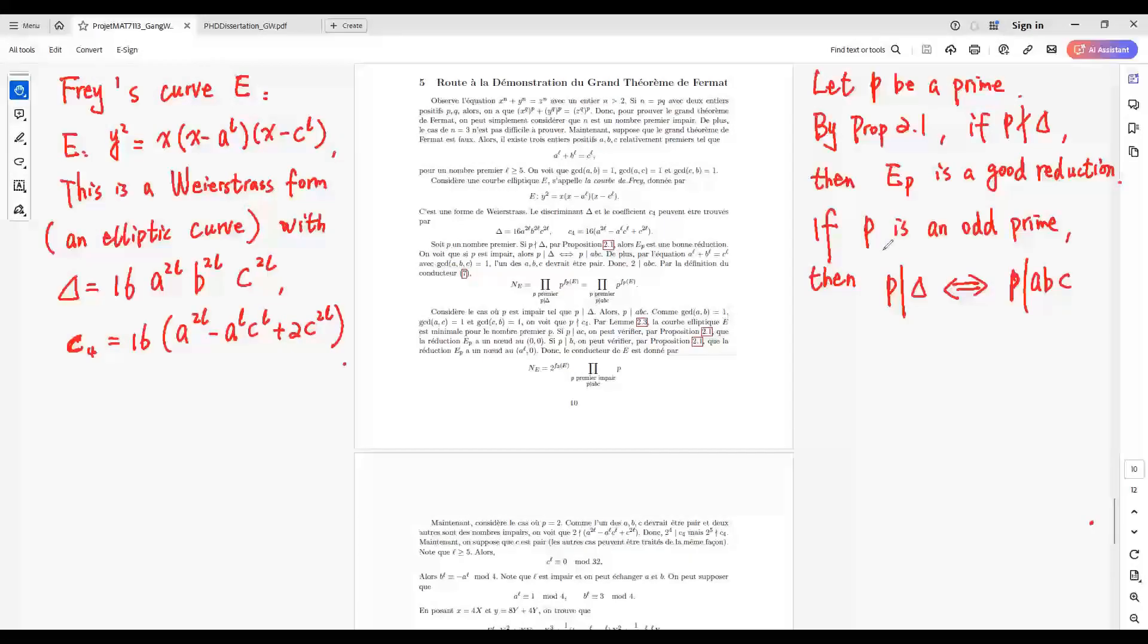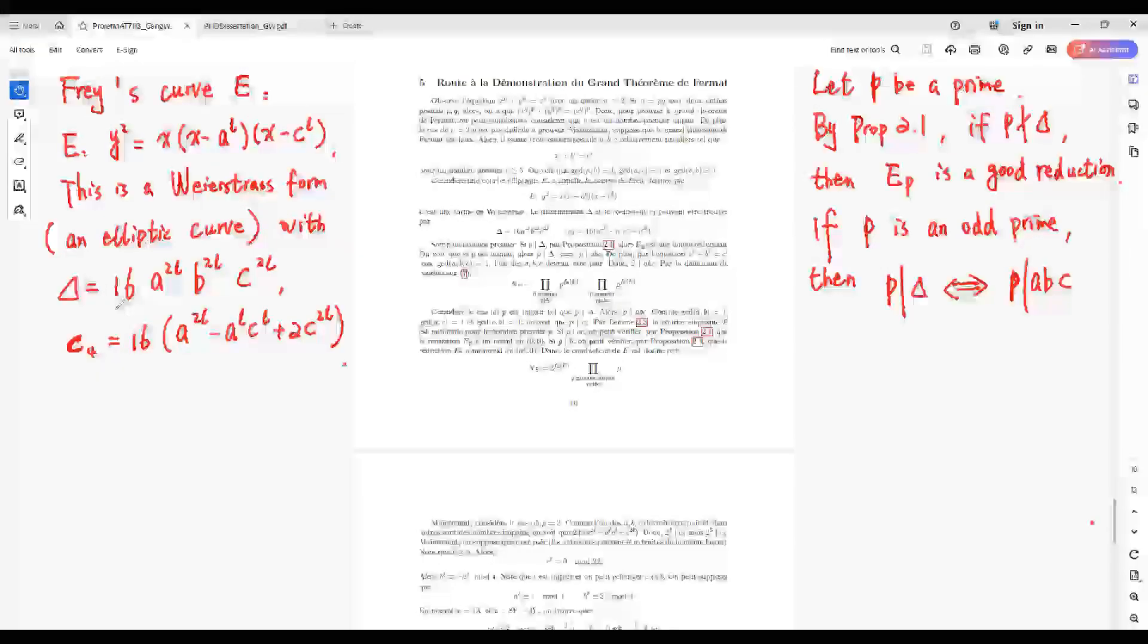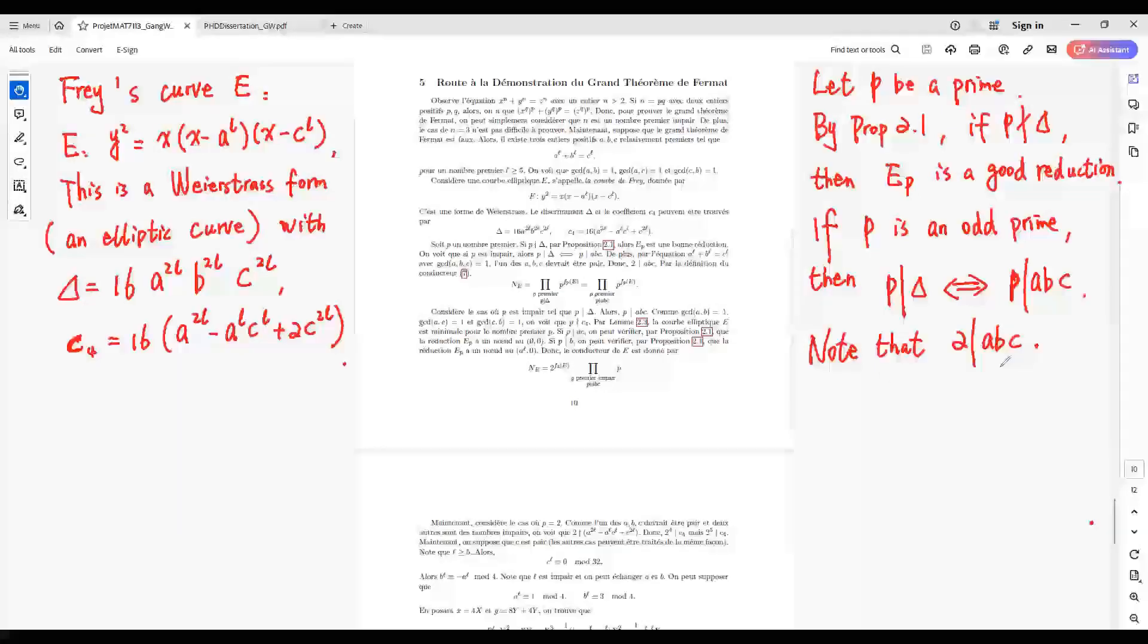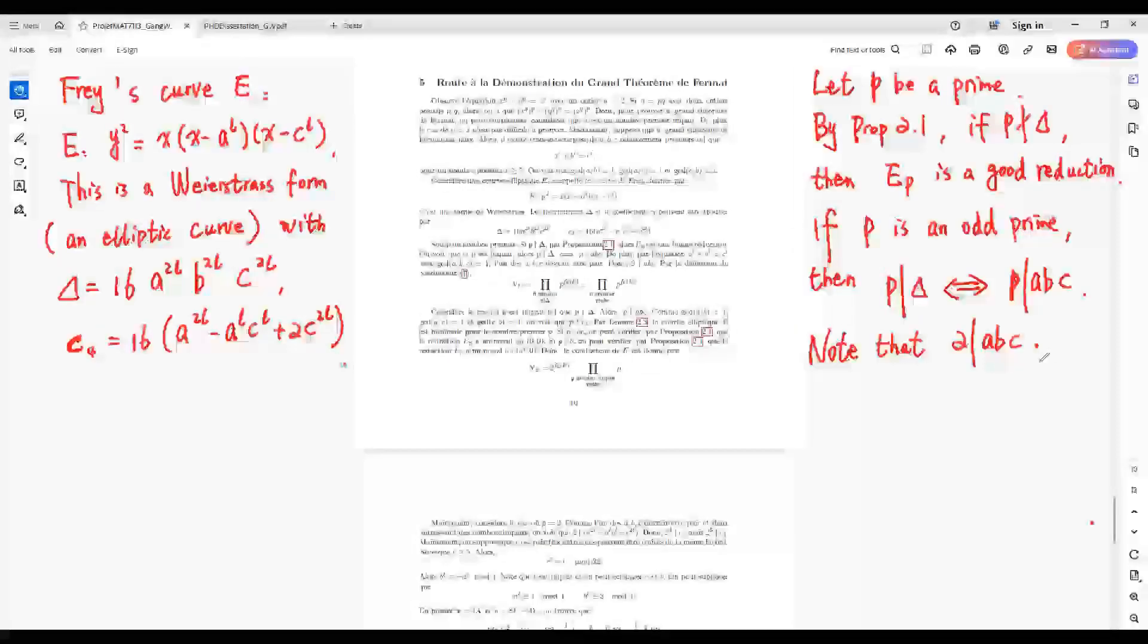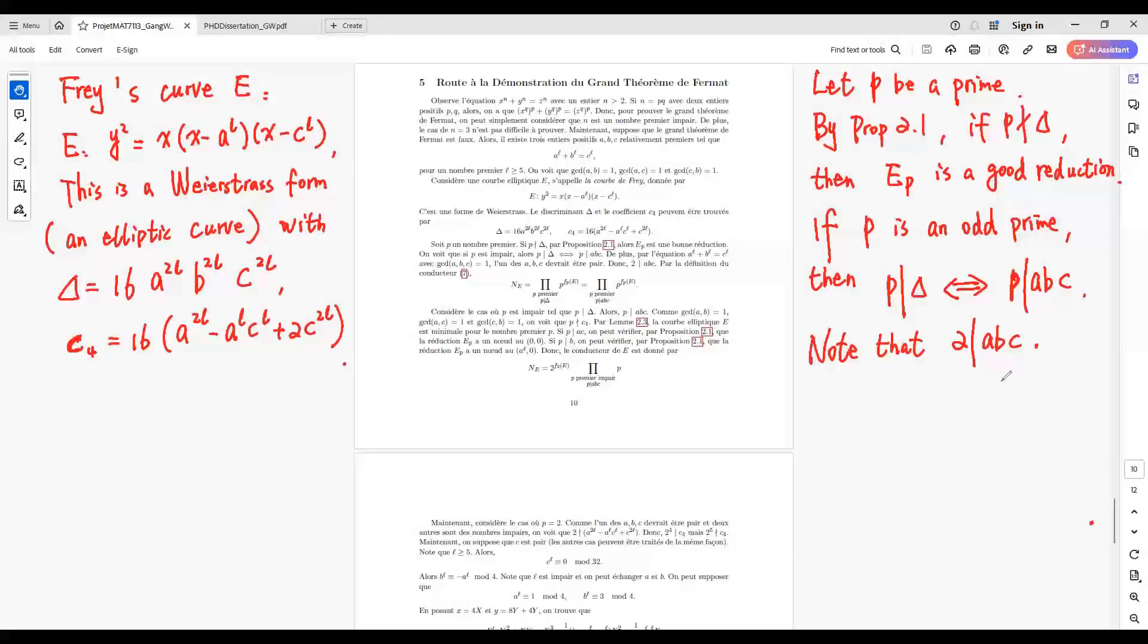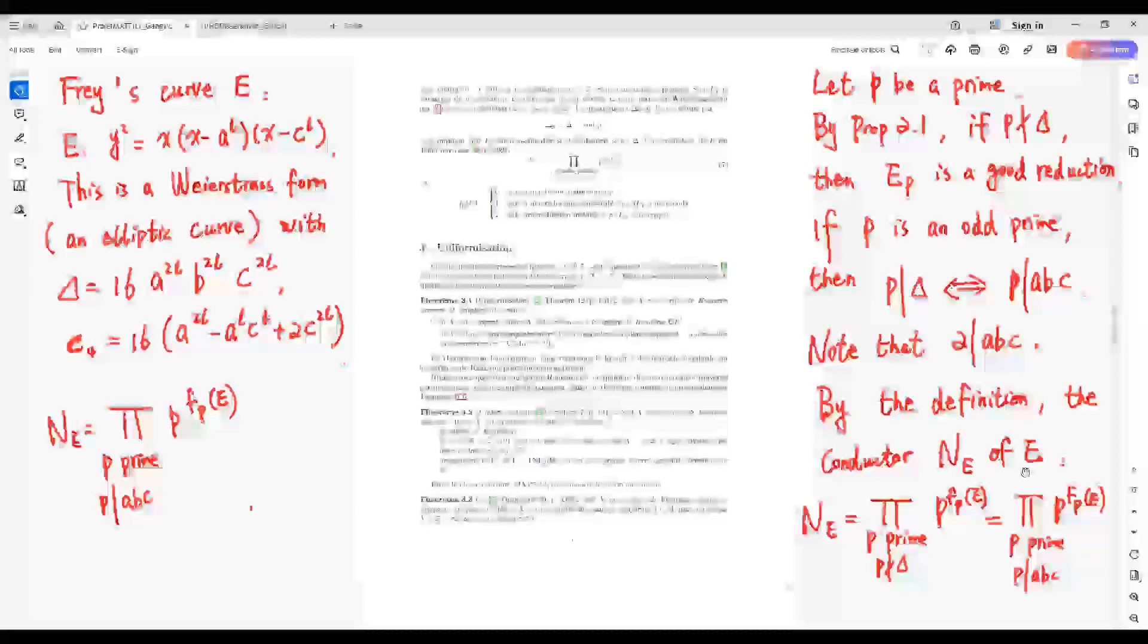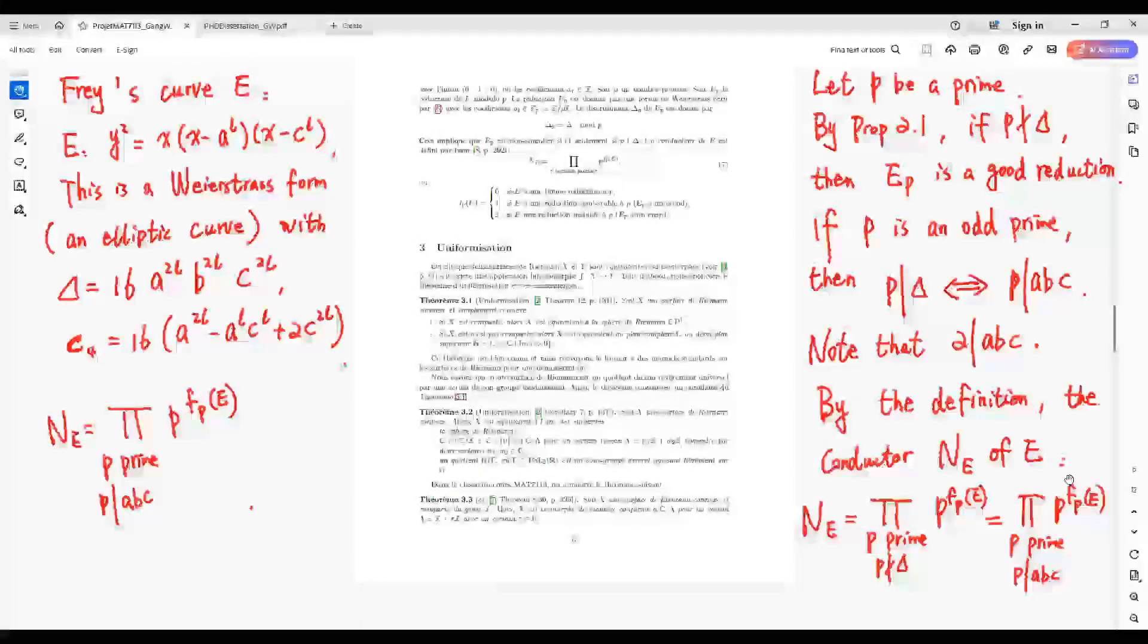If P is not 2, then we have this equivalence by the delta obtained here. Note that one of A, B, C is even, so we have this one. By definition here, the conductor of E is given by N_E equals this one.